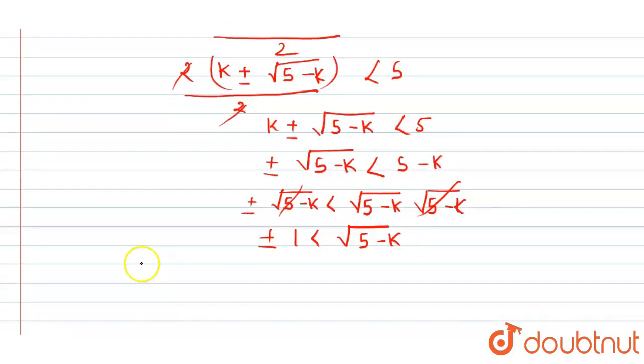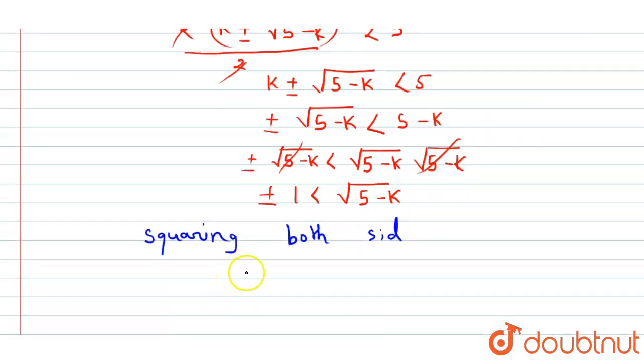Then we will do squaring both sides. We will get 1 less than 5 minus k, and when we solve this, we will get k less than 4.